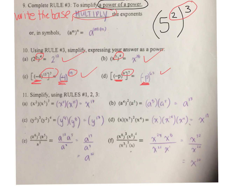We have to simplify using all three rules. Look here: x to the power of 2 times x to the power of 5 to the power of 3. You have to simplify your power of a power first. So x to the power of 5 to the power of 3 is x to the power of 15. Then multiply it by x to the power of 2 — add the exponents: 15 plus 2 is 17.